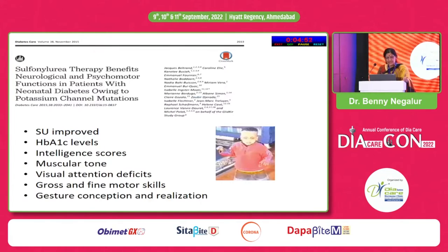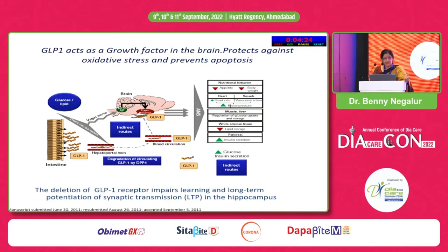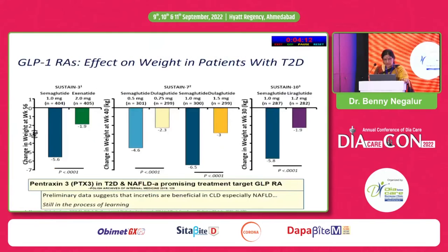Sulfonylureas have an effect on potassium channels. In DEND syndrome, patients have neonatal diabetes and neurological symptoms — the same potassium channel impact occurring in both beta cells and brain cells — so correction of potassium channel activity can treat DEND syndrome and neonatal diabetes. GLP-1 is a growth factor in the brain that protects against oxidative stress and prevents apoptosis. Deletion of GLP-1 receptors impairs learning and long-term potentiation of synaptic transmission in the hippocampus, and giving a GLP-1 analog can be beneficial. GLP-1 also produces weight loss, which impacts fatty liver; over 10% weight loss can reverse fatty liver in initial stages.